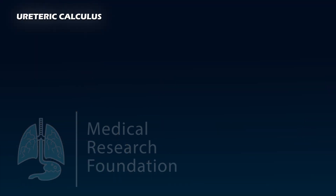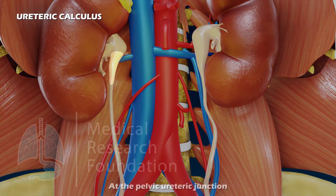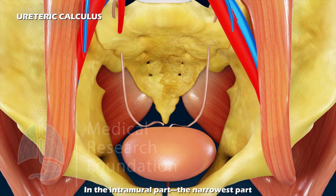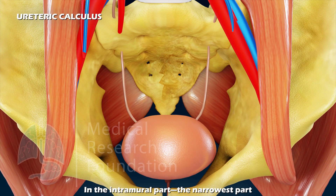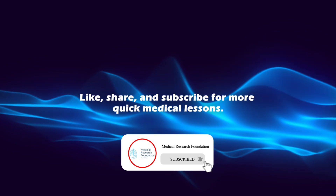Ureteric calculus is likely to lodge at one of the sites of anatomical narrowings, particularly at the pelvic-ureteric junction, where it crosses the pelvic brim, and in the intramural part, which is the narrowest part. That's the ureter in a nutshell — like, share, and subscribe for more quick medical lessons.